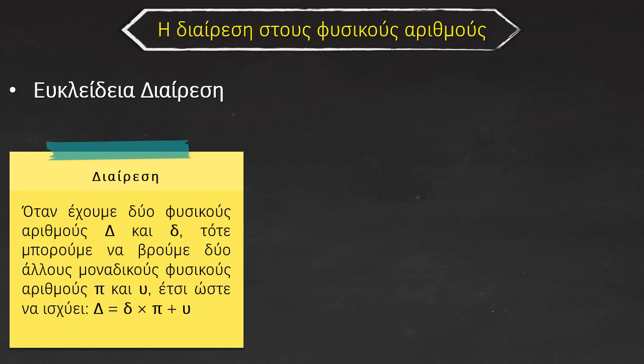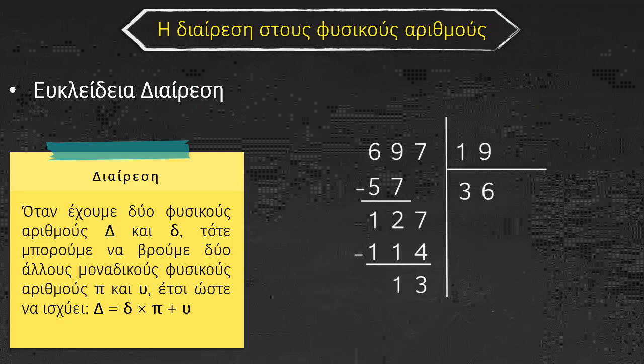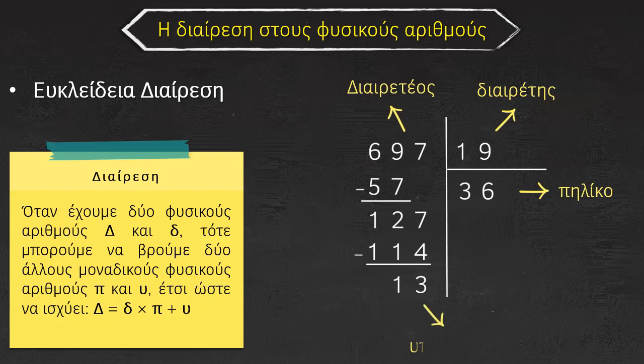Η ευκλήδεια διαίρεση. Όταν έχουμε δύο φυσικούς αριθμούς, τον διαιρετέο και τον διαιρέτη, τότε μπορούμε να βρούμε δύο άλλους μοναδικούς φυσικούς αριθμούς, το πηλίκο και το υπόλοιπο. Έτσι ώστε να ισχύει: ο διαιρετέος είναι ίσος με τον διαιρέτη επί το πηλίκο συν το υπόλοιπο. Το 697 είναι ο διαιρετέος, το 19 είναι ο διαιρέτης, το 36 είναι το πηλίκο και το 13 είναι το υπόλοιπο.